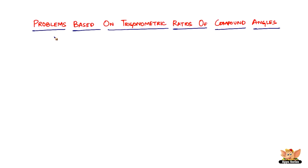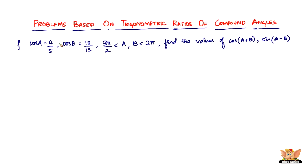In this video we are going to continue to solve more problems based on trigonometric ratios of compound angles. Here we've got a question which reads: if cos a equals 4/5 and cos b equals 12/13, such that angles a and b are greater than 3π/2 (270°) but less than 2π (360°), so a and b are in the fourth quadrant.